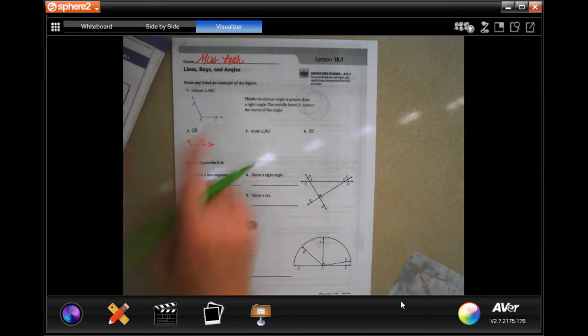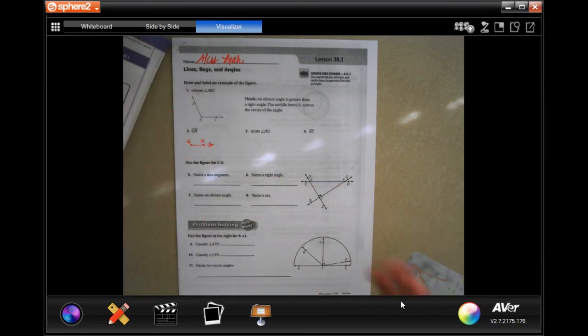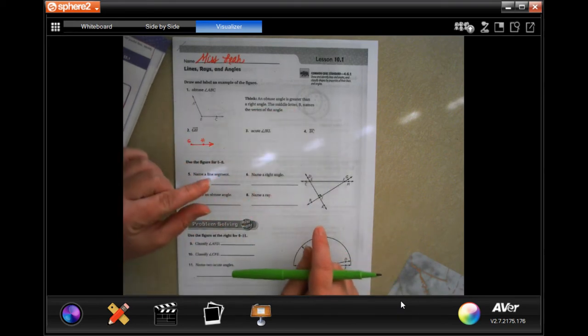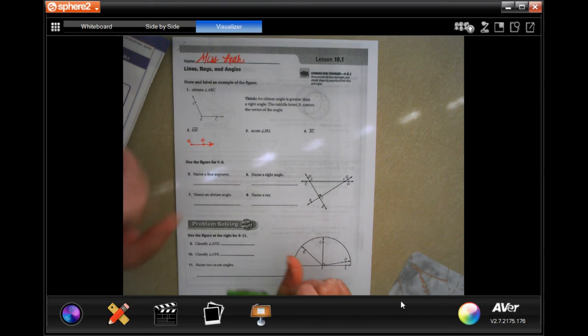When it's open more than 90 degrees, it's obtuse because it's bigger and obnoxious. When it's smaller than 90 degrees, it's acute.